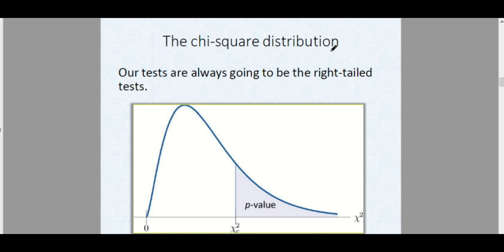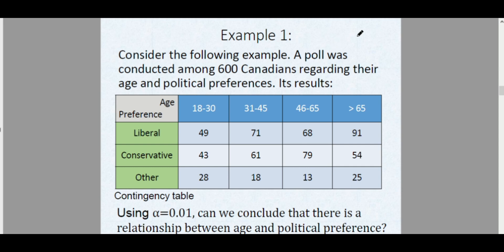Consider the following example: a poll was conducted among 600 Canadians regarding their age and political preferences. The ages are categorized on the upper part, and we also have political preferences — Liberal, Conservative, and Others. This forms our contingency table. Using α = 0.01 as our level of significance, can we conclude that there is a relationship between age and political preference?